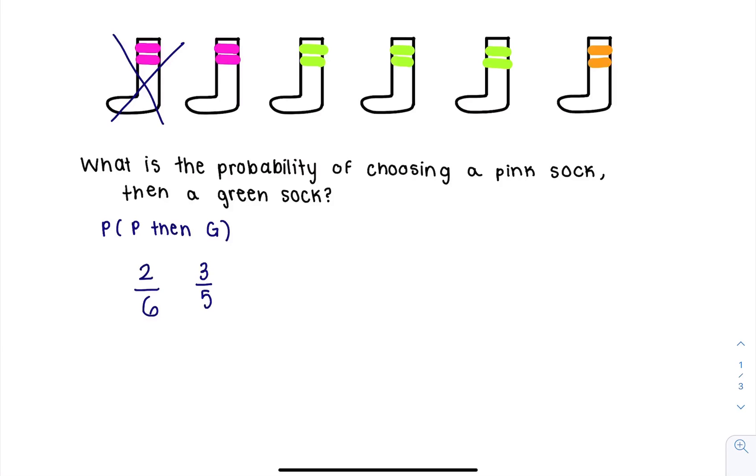When we encounter something like this, we are going to multiply. When we multiply, we end up with six out of 30, which is three out of 10 or 0.3.